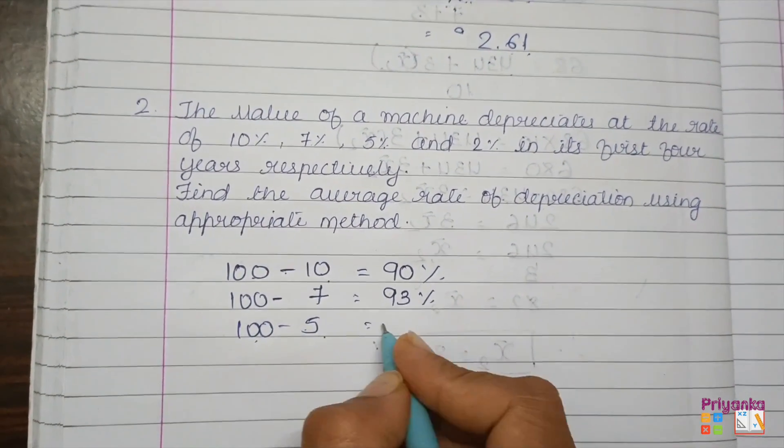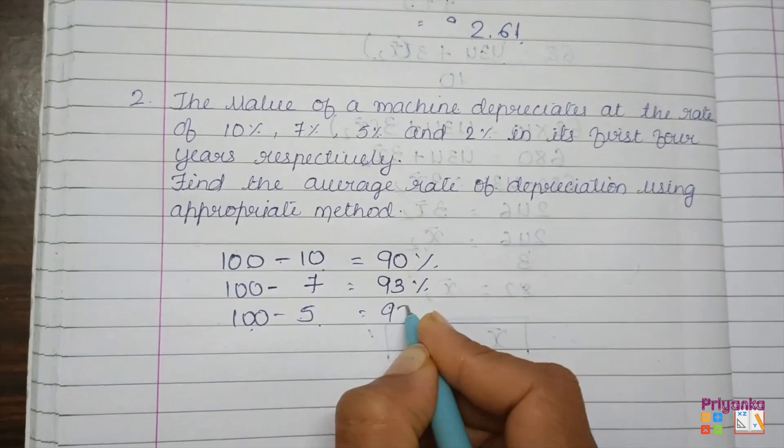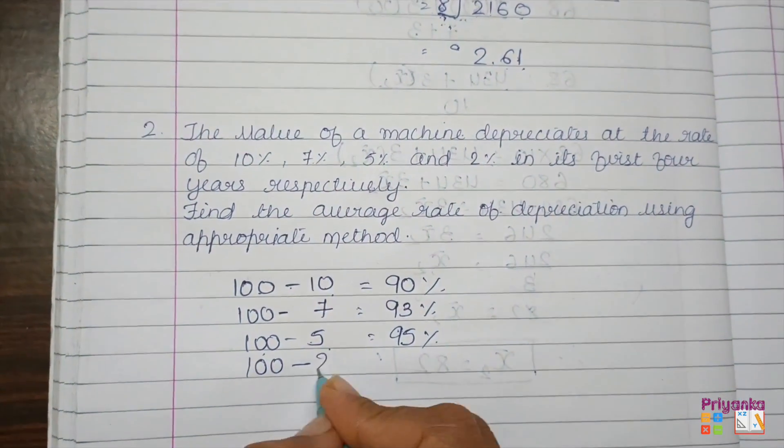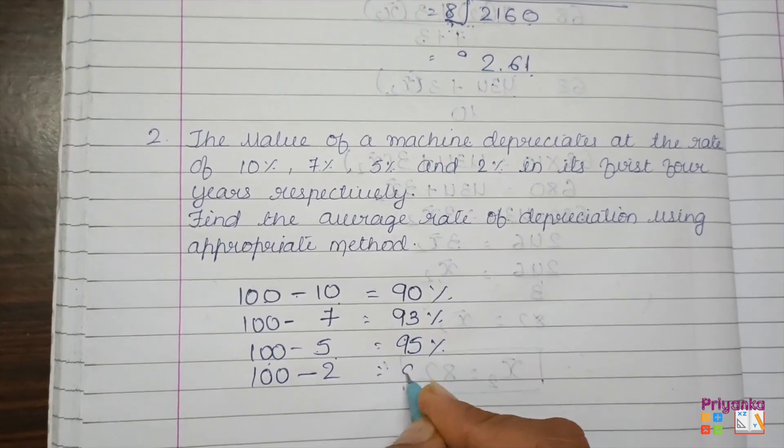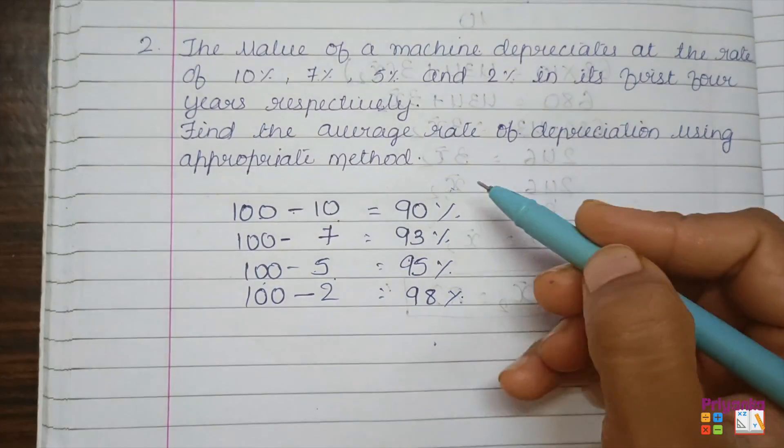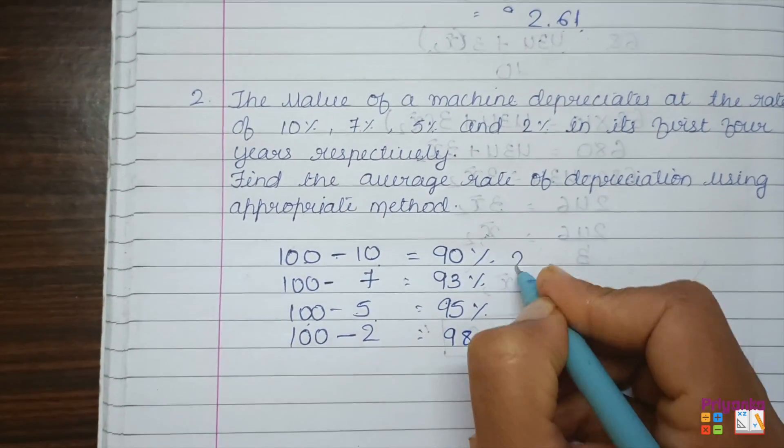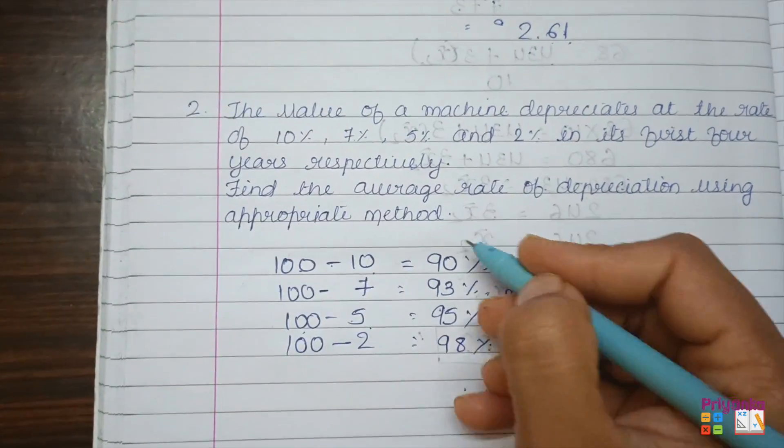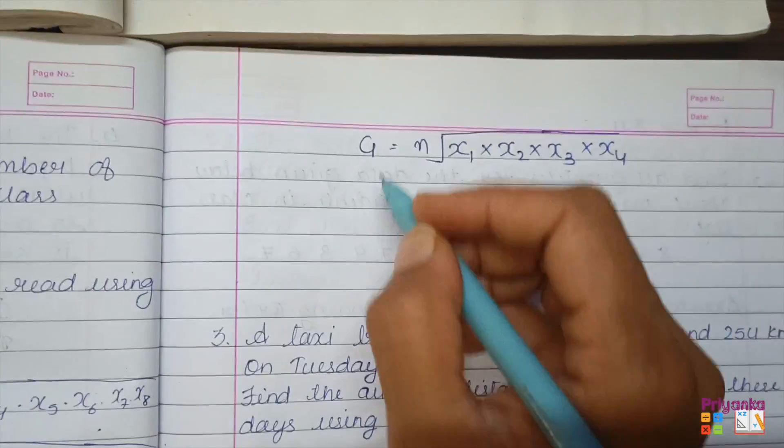Means for the next time it is 93%. Same way for the remaining percentage depreciation, get it minus out of 100. 100 minus 5, the value of the machine must be 95. Next for 2, we will take it as 98. So here we get the information of x₁, x₂, x₃, and x₄.